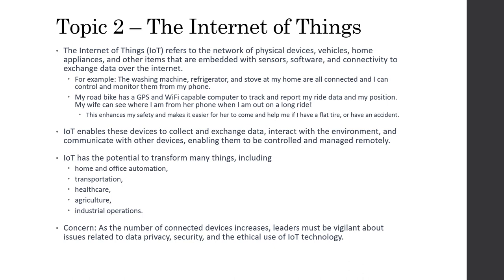Think of the Ring doorbell you might have on your home — it can capture video and store it when it captures activity. It has a sensor, a camera, and a microphone. When it senses activity, it records and sends it off to some central location. I mentioned the washing machine, fridge — all these things.